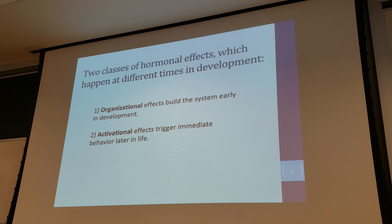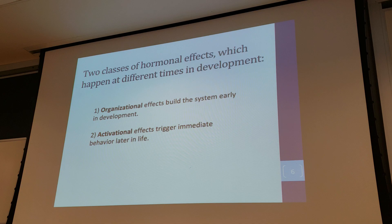We all start off with two sets of structures that can be used for males or females — both sets are there. It really is the expression of a single gene coming off the Y chromosome that starts the whole process: the gonads, the testes start to develop, they start making hormones, and that further develops the system into the male or female extremes. But we all start off with the capacity to become either one. In utero for us, or in the egg for birds, we are already exposed to sex hormones even as developing babies, and these help build the structures that will later help us sexually reproduce.